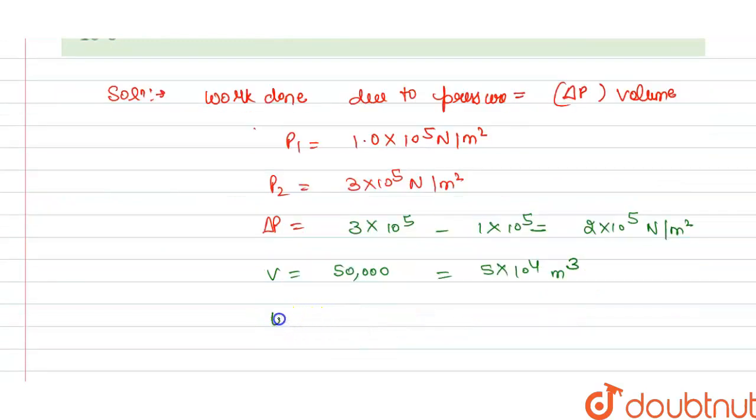So we can write: work done W equals change in pressure, which is 2×10^5, multiplied by volume, which is 5×10^4. We get this equals